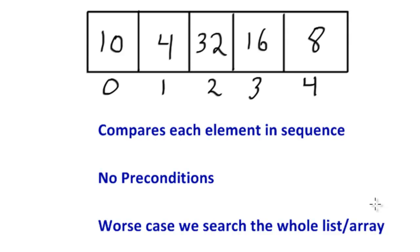The number of comparisons — the amount of work that has to be done — grows proportionally to the size of the array in the worst case. Of course, we can always get lucky and find the thing we're looking for in the very first element. So if we were searching for the value 10, we would just perform a comparison on the first element and be able to stop.